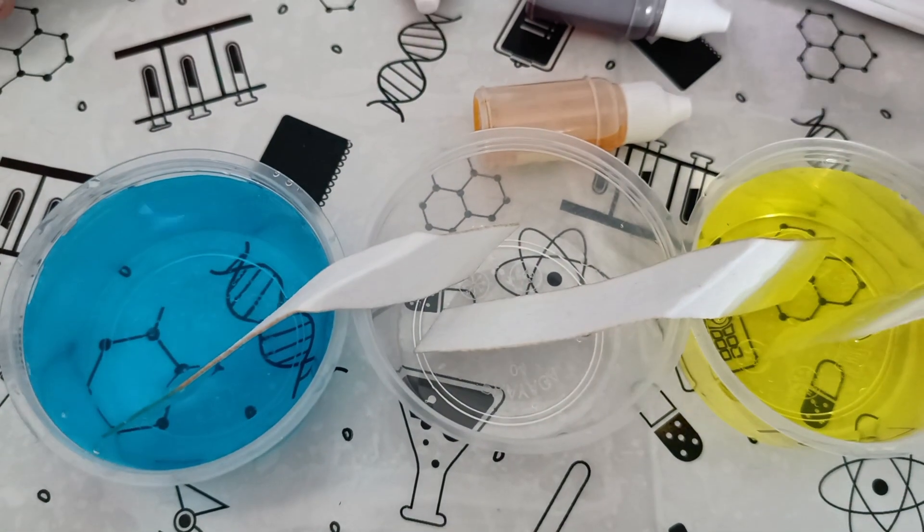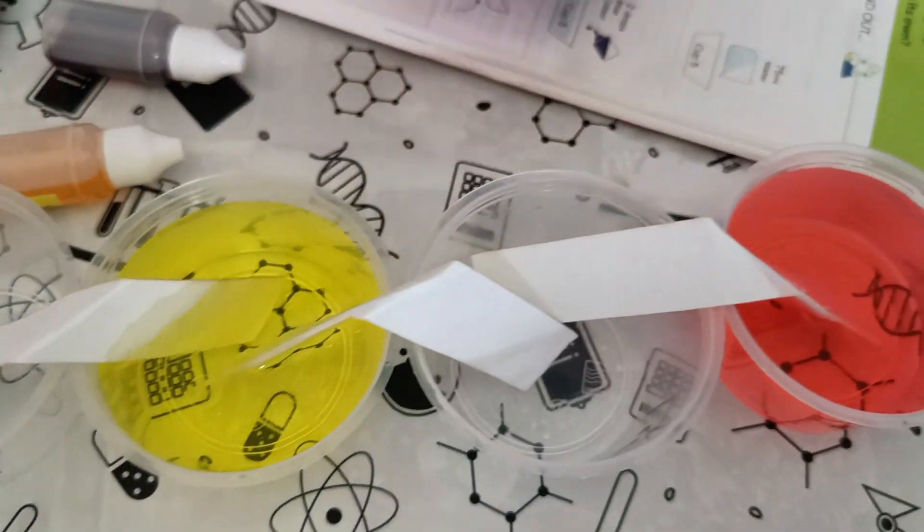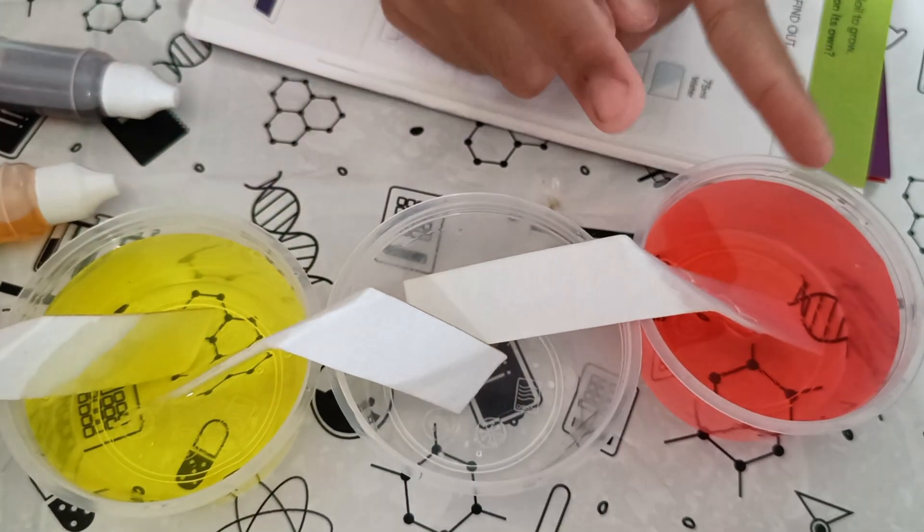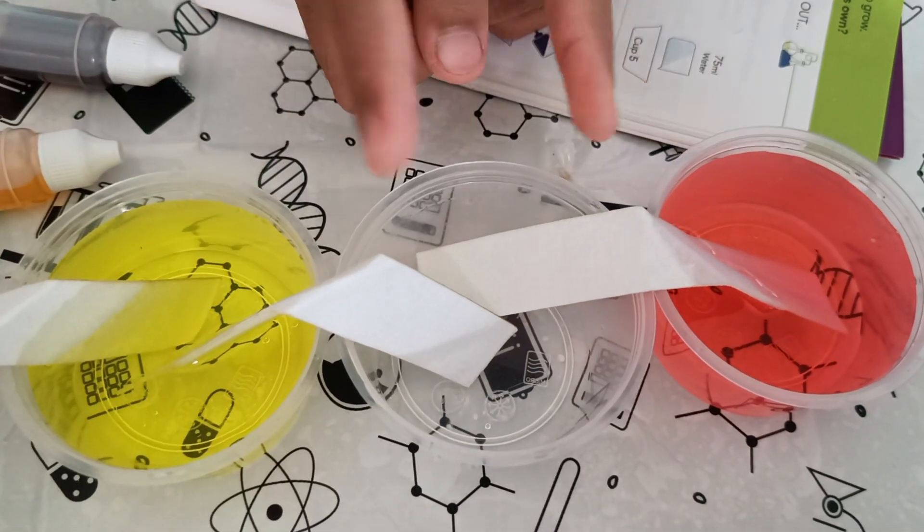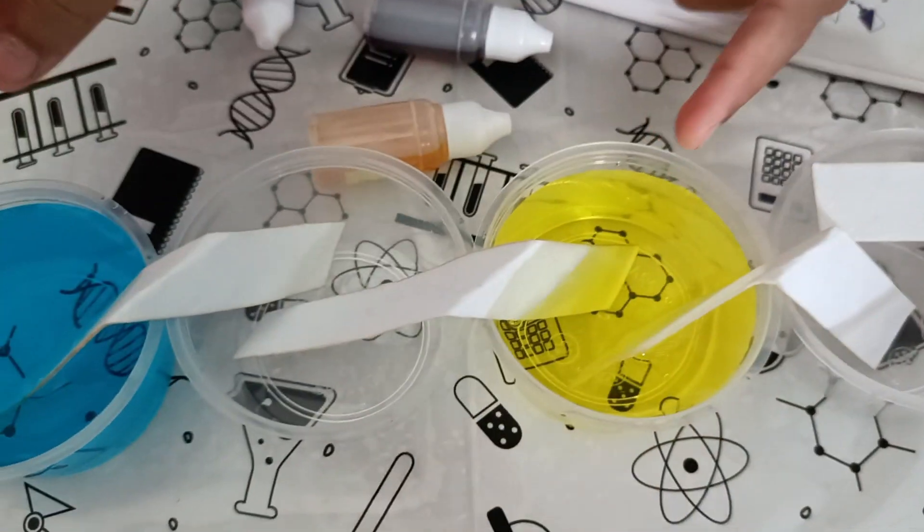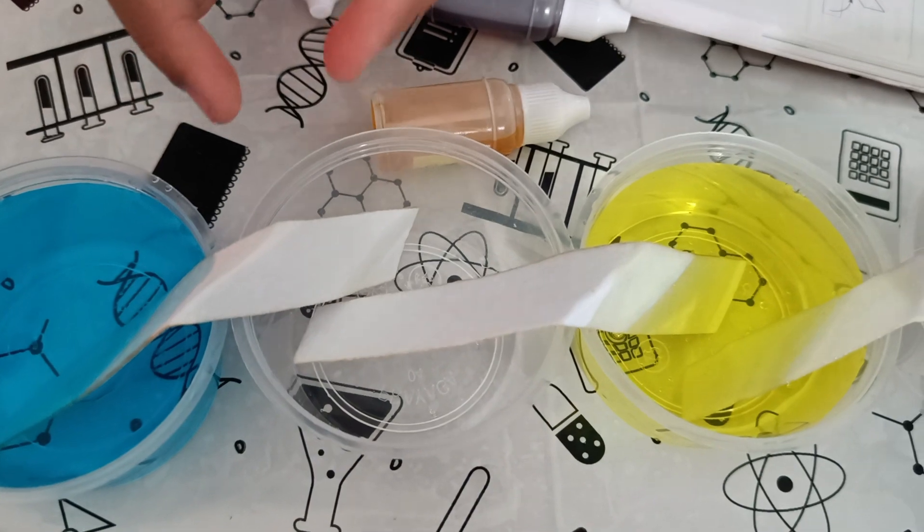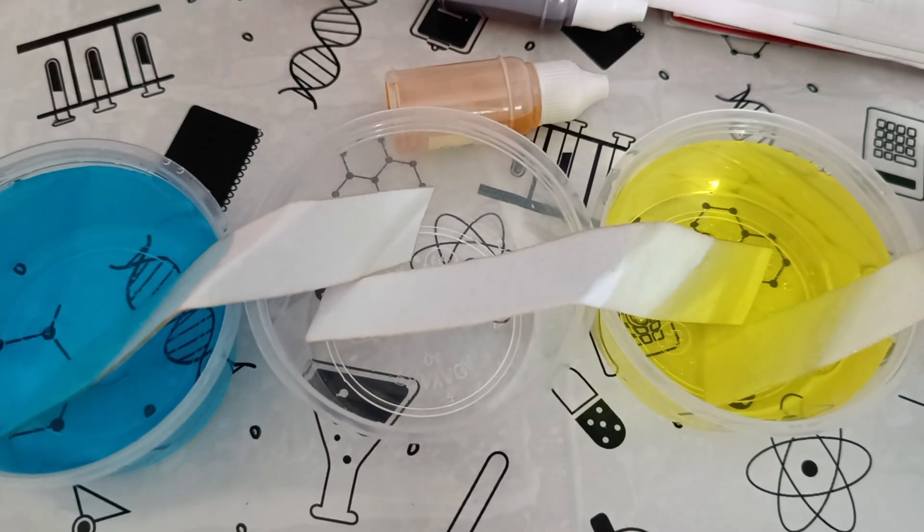Okay, now let them absorb and let us see what happens. Red and yellow will mix over here by these paper strips and become orange, and yellow and blue will mix and become green over here. Let us see.